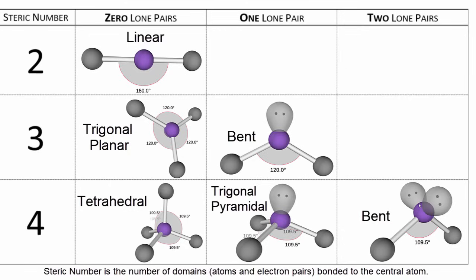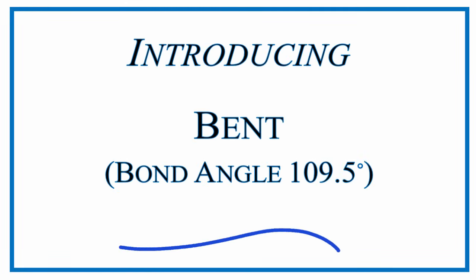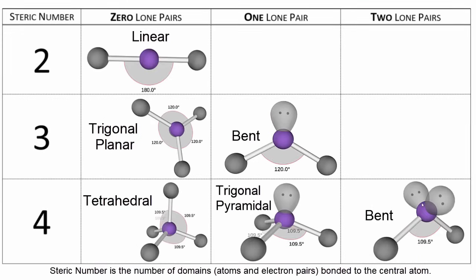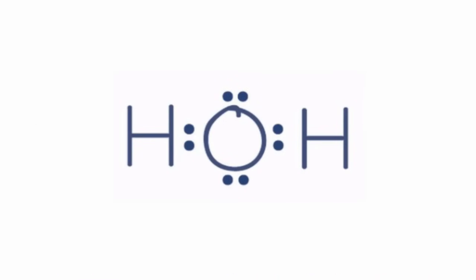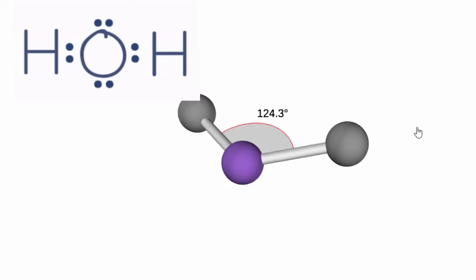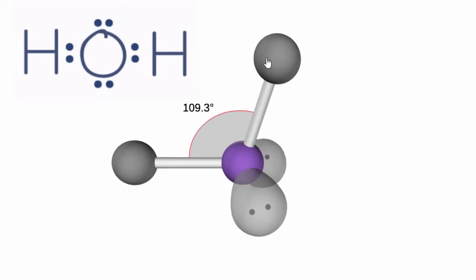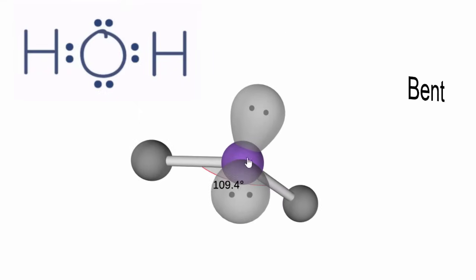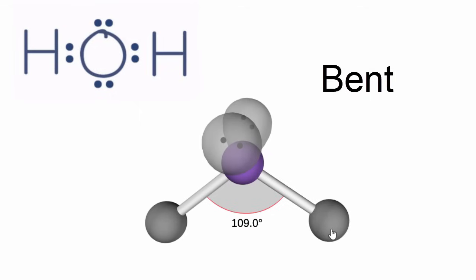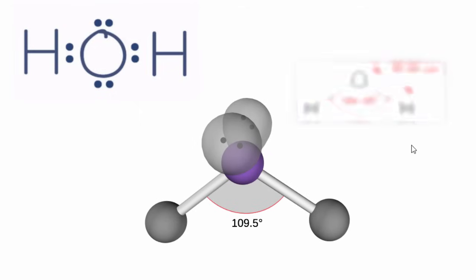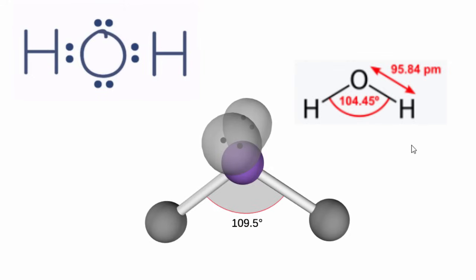Next up, we need to look at what happens when we have two lone pairs and two atoms. With two lone pairs and two atoms — a steric number of four — we have a bent molecular geometry. A good example is water. In the Lewis structure, you can see two atoms and two lone pairs, which makes this a bent molecular geometry. We add our two hydrogen atoms, they spread out, and then we add our two lone pairs — and this is the bent molecular geometry for water. You might note that the bond angle is approximately 109.5 degrees, though if you look the specific bond angle up for water it would be a little different. This is a general model that gives us a general idea of what the bond angle will be for a bent molecular geometry.